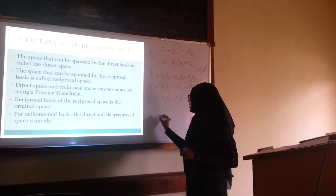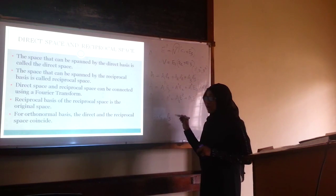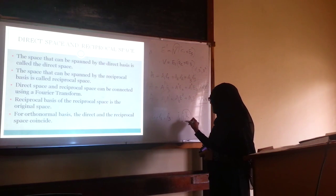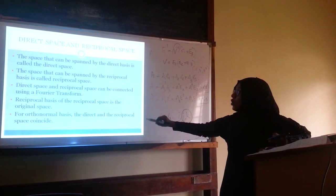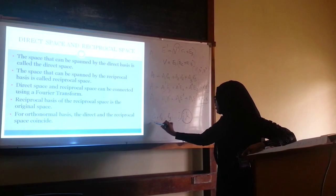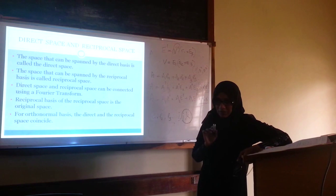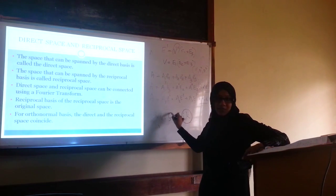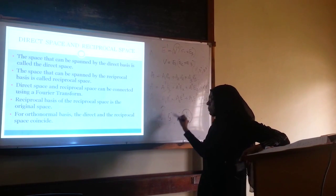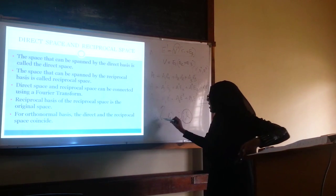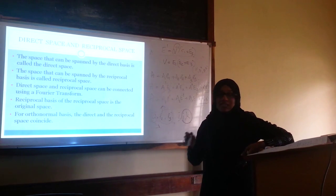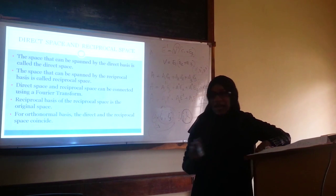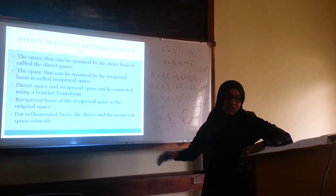Consider our conventional notation I, J, K. We know that I is perpendicular to both J and K, and J is perpendicular to I and K. For constructing the reciprocal basis vector for E1, we need two vectors orthogonal to E1 — and in the direct basis itself we already have E2 and E3. Similarly for E2 and E3. Therefore, an orthonormal basis is the reciprocal basis of itself, and the reciprocal space and direct space coincide for an orthonormal basis.